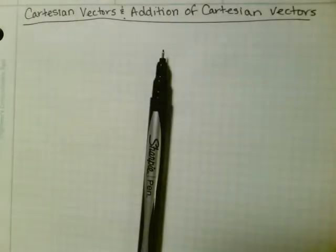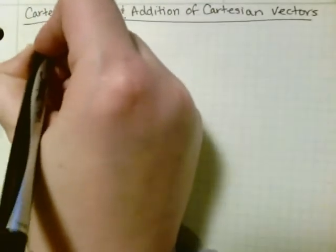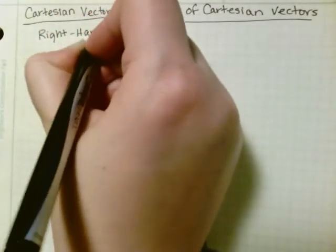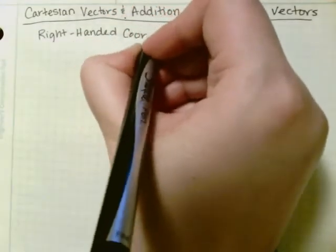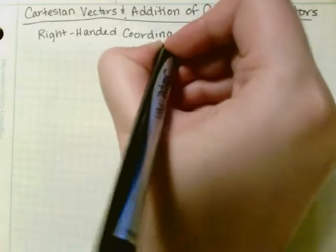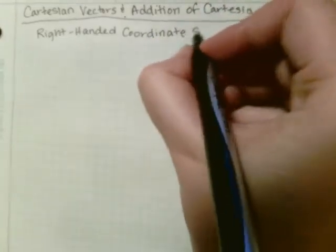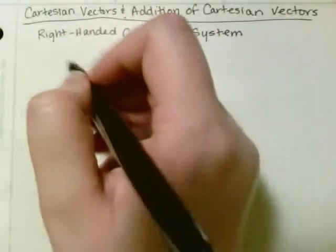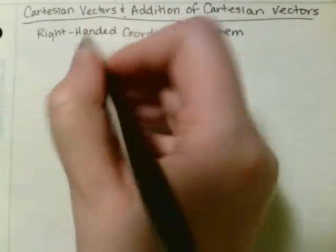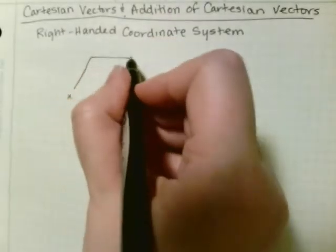Cartesian vectors and addition of Cartesian vectors. So first we're going to discuss the right-handed coordinate system, so we have x and y.